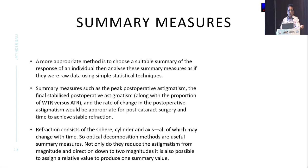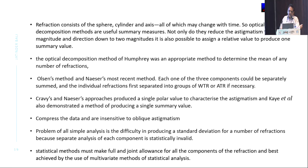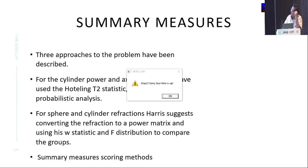This brings us to the fact that we need some sort of a summary measure, like peak post-op astigmatism, final stabilized post-op astigmatism, and the rate of change in post-op astigmatism. This gives you numbers, counts, and percentages that allow a lot of statistical analysis. Refraction consists of sphere, cylinder, and axis, which can be converted into one measure. Statistical methods must take full and joint allowance of all components of refraction, best achieved by bivariate and multivariate methods.